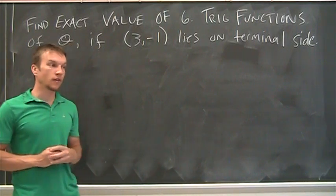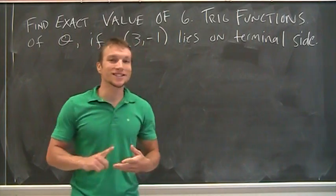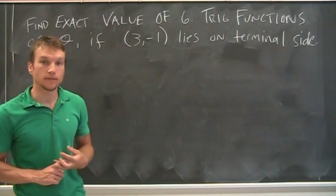So what does that mean? Well, the six trig functions, of course, come to mind: sine, cosine, tangent, cosecant, secant, and cotangent of theta. That's what we need to find.